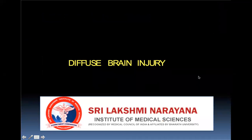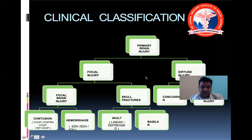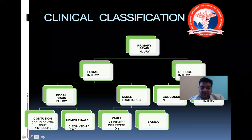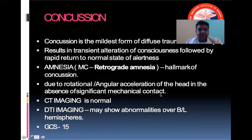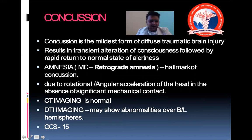Diffuse brain injury is a dreaded problem encountered with brain trauma — the entire brain matter is affected rather than being limited to one part. Diffuse brain injury comprises concussions and diffuse axonal injuries. Concussion is the mildest form of diffuse traumatic brain injury and is usually self-resolving with good results.